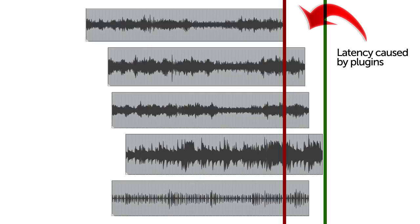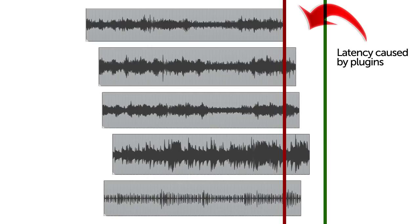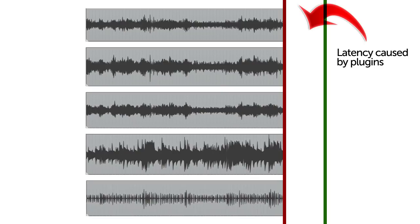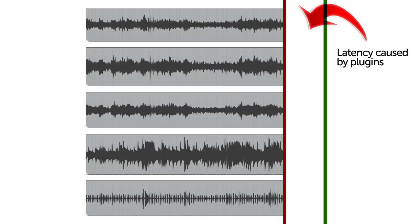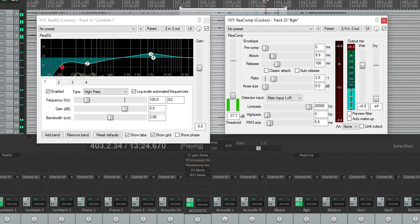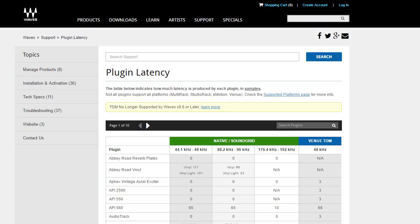Any other added latency comes from Reaper, and the solution is simple: avoid any plugins that add latency. The way Reaper works, to keep all channels time-aligned, it delays every channel to match the slowest channel. While it may be tempting to use free VST plugins downloaded from the internet — and I have found some that are zero latency — most will introduce latency. The EQ and compressor that come with Reaper are zero-latency plugins and work great. Waves also makes a number of low-latency or zero-latency plugins. Stick with those and be picky about plugin latency, and you should be fine.